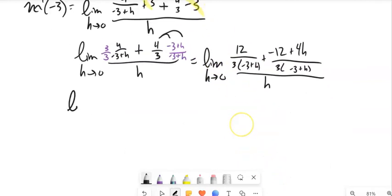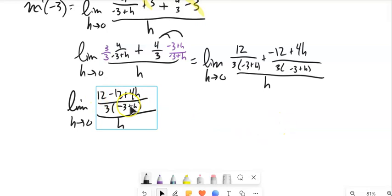Let me keep going from here. Limit as H approaches 0. Notice these have a common denominator. So basically, I have 12 plus negative 12 plus 4H. Sorry, 4H. All over H. So 12 minus 12 is 0. I'm just going to clean that up right here. So I don't have to rewrite it. So I have this.